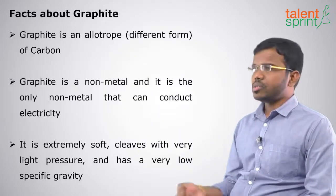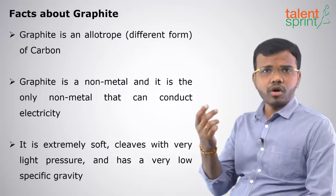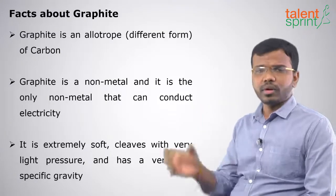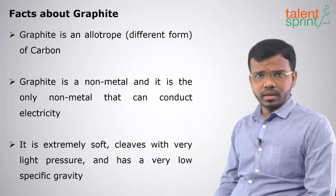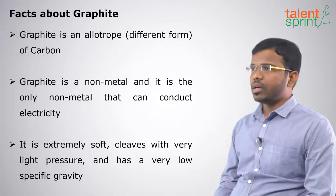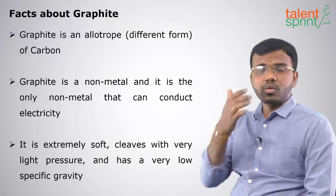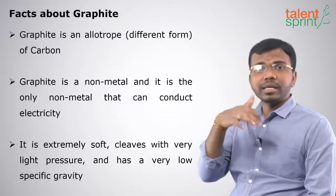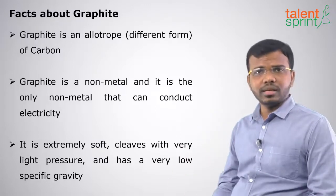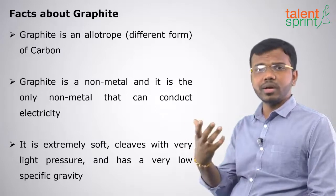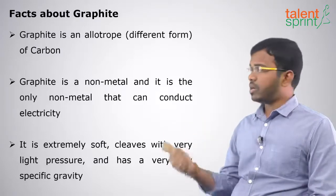Graphite is an allotrope — allotrope means a different form — of carbon. So one of the different forms of carbon is graphite. Graphite is a non-metal and it is the only non-metal that can conduct electricity.